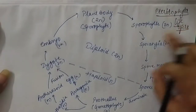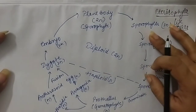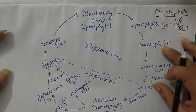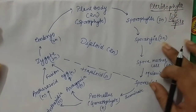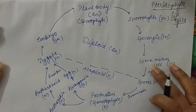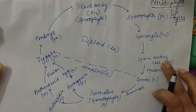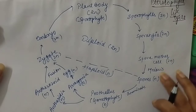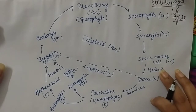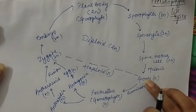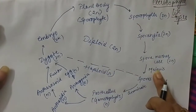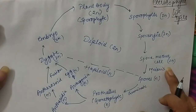Sporophylls are leaves which contain sporangia inside. Inside the sporangia, many spore mother cells are present, which conduct reduction division or meiosis, by which spores are formed. These spores are haploid in nature because they are formed by meiosis.